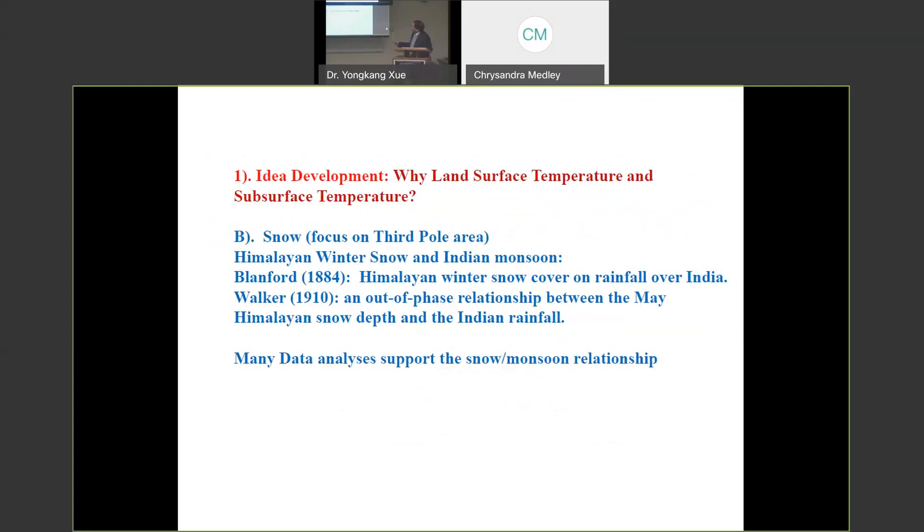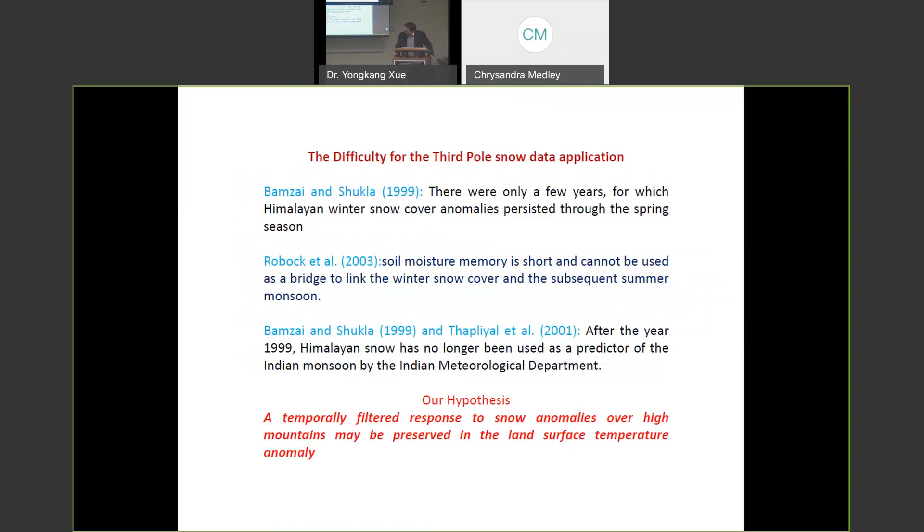In 2016 and 2017, next year was La Nina. Supposed to be dry, but the rain is very extensive. California actually stopped, actually finished, eliminated the California drought, five-year drought. So that means we have to consider more factors. Another factor considered in the study was the snow. Snow, so my target is more focused on the third pole area. That's the Tibetan plateau and the Himalaya. So for the Eurasia, it's different. So in Himalaya, winter snow and the India monsoon, that's the relation has been proposed by Blanford in 1884. So there is a relation.